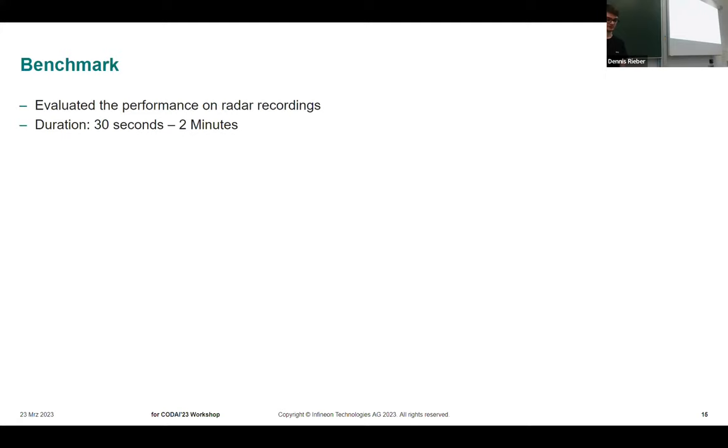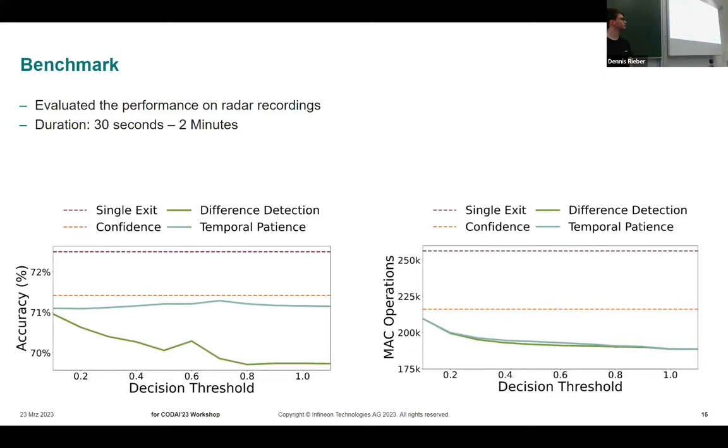We ran an initial benchmark on a private radar dataset. The recordings were rather short, between half a minute and two minutes, so the scenes within the recordings were even shorter. That was the best data that we could collect in the time. In the smart home environment, you will have much lower environmental change rates. We compared to the original senior exit architecture that we based our early exit network on, as well as an exit-wise tuned confidence-based decision mechanism on the same architecture. You can see that the difference detection across the different decision thresholds that we've tested drops off rather quickly, whereas the temporal patience is more stable and comparable in accuracy to the confidence-based solution.